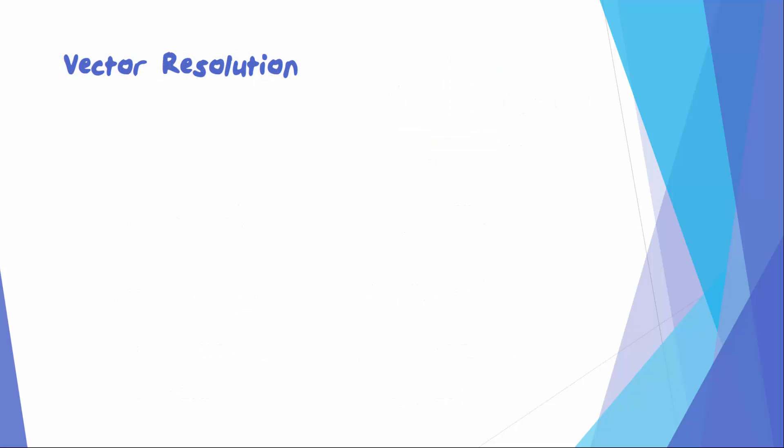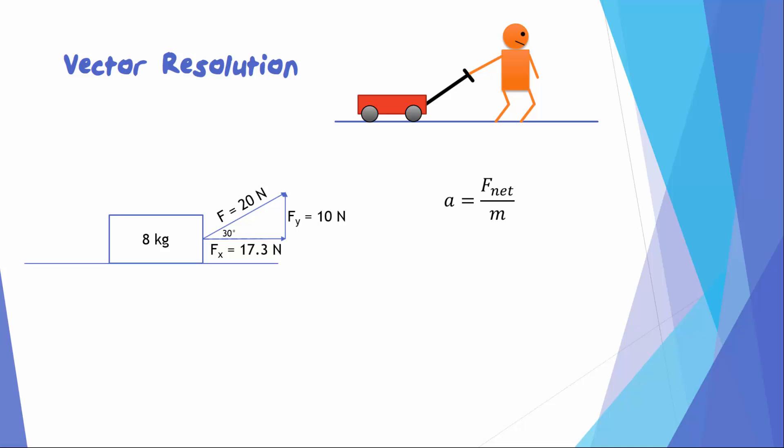Let's get back to our problem. Now that we know the horizontal component of the force is 17.3 N, we can calculate the acceleration of the wagon. A equals F net over M. The net horizontal force is 17.3 N. We'll divide that by the 8 kg mass and find that the acceleration of this wagon is 2.16 meters per second squared.